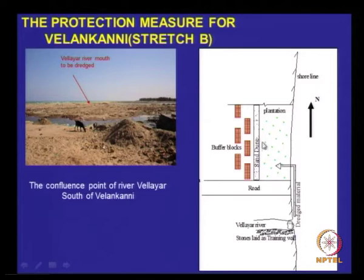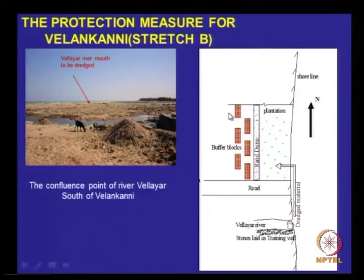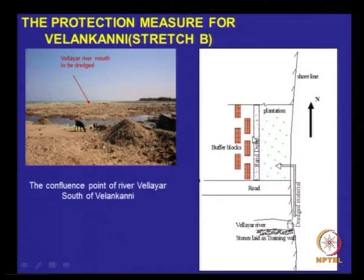The idea is to dredge the Valar river, take the sand and put it just in front of the church, so that in case of extreme flooding it can act as a buffer. Have plantations and a sand dune here, then buffer blocks, so that in an event like a tsunami the water has to go through the plantation, then over the sand dune, and then later through the buffer blocks. The buffer blocks are staggered so the velocity will drastically reduce. We make use of cleaning the river wherever we have adjoining rivers.